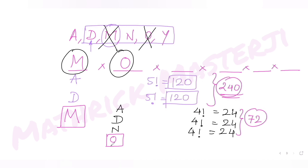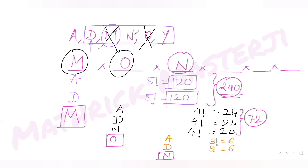With M and O fixed, we look at the third letter. Alphabetically, A comes first — three remaining positions fill in 3! = 6 ways. Then D in third position gives another 6 words. That is 12 more words before we reach MON. For the fourth letter, with M, O, N fixed, alphabetically A comes first — two remaining positions fill in 2! = 2 ways.